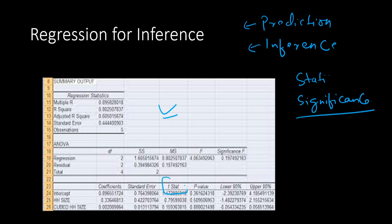We look at the t-statistics. If the t-statistic is greater than, let's say, 2.7, we also look at the corresponding p-value, which is similar to the t-statistic, and anything less than 0.05 we take as significant at 95% confidence.